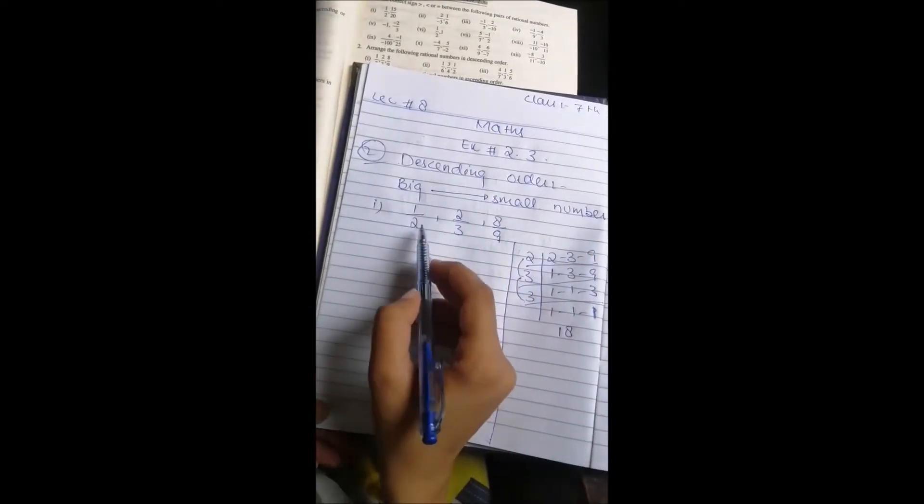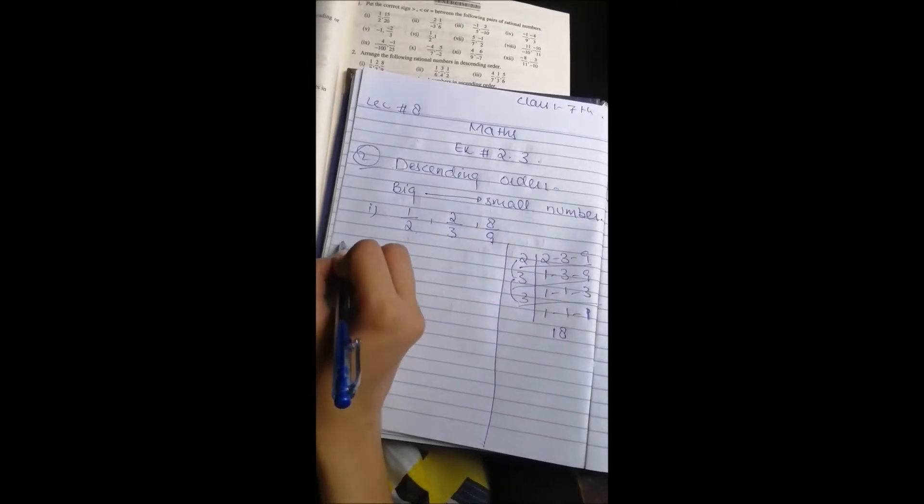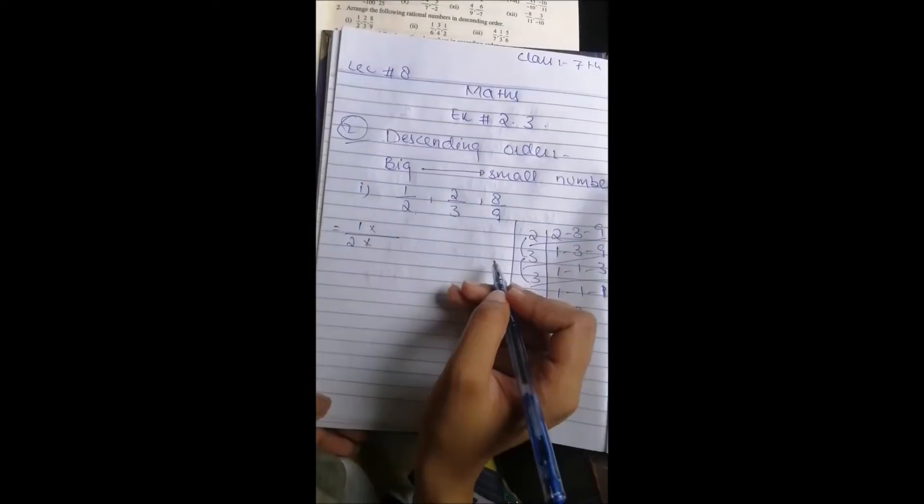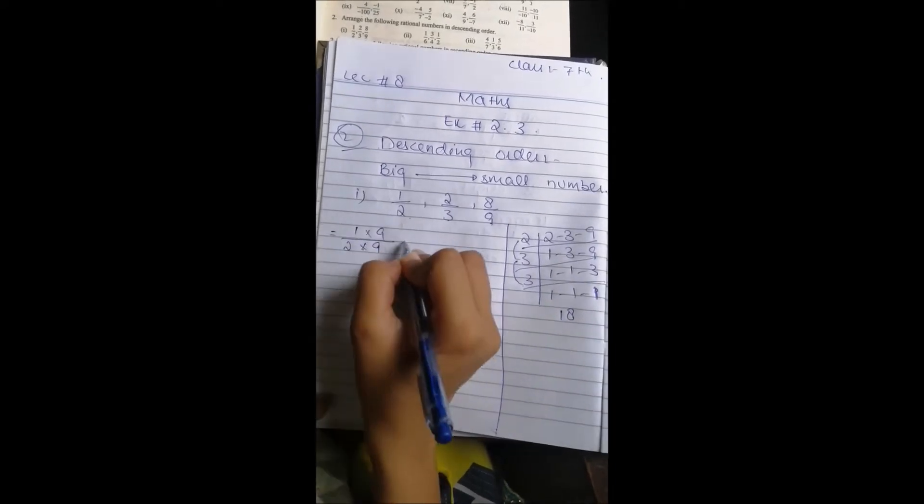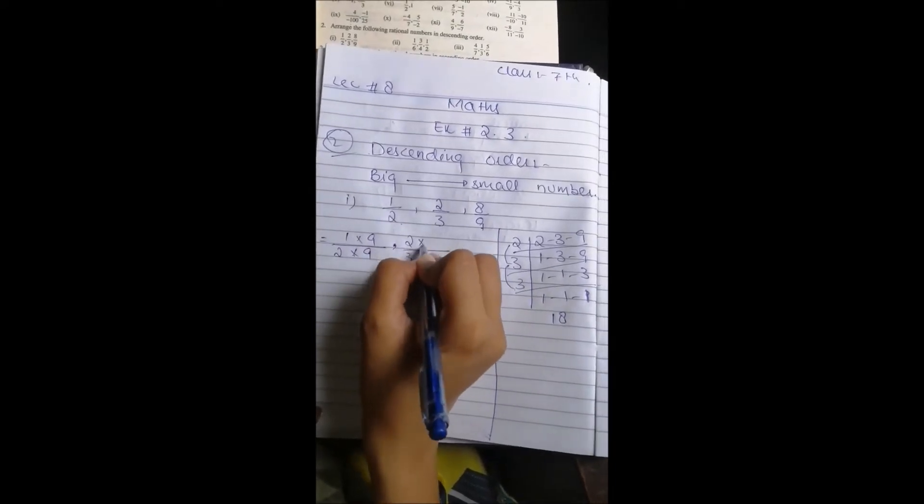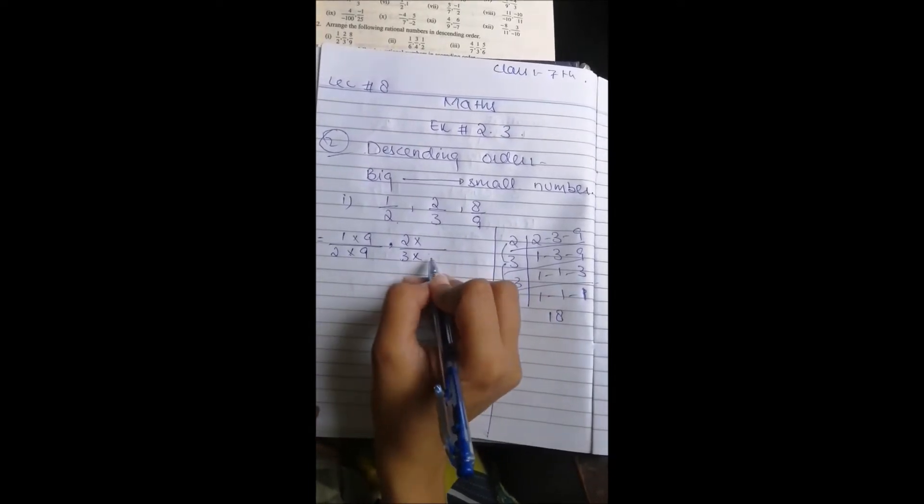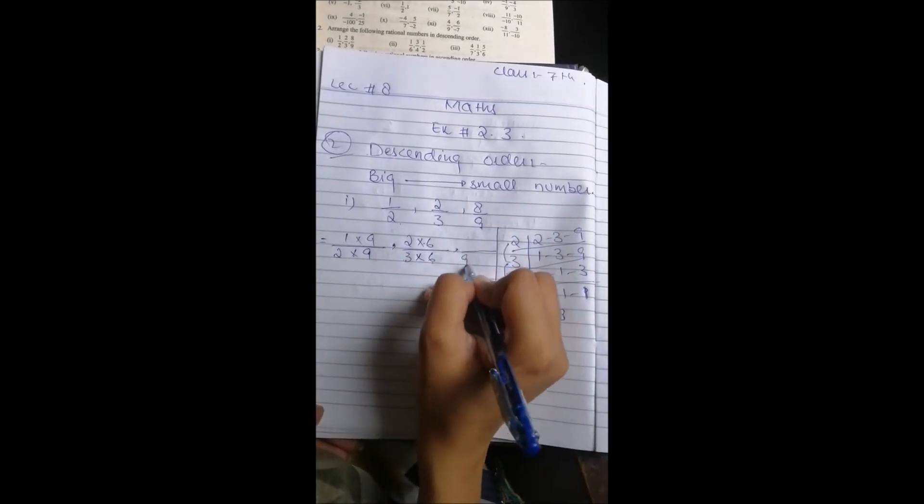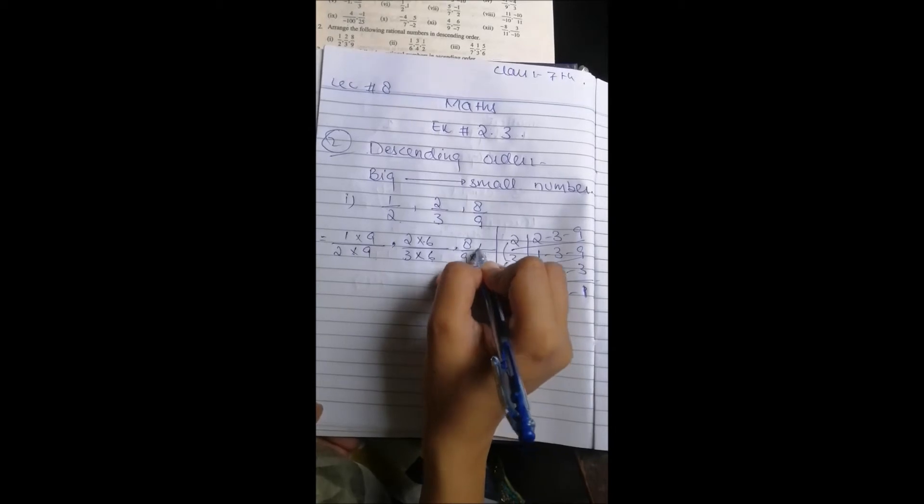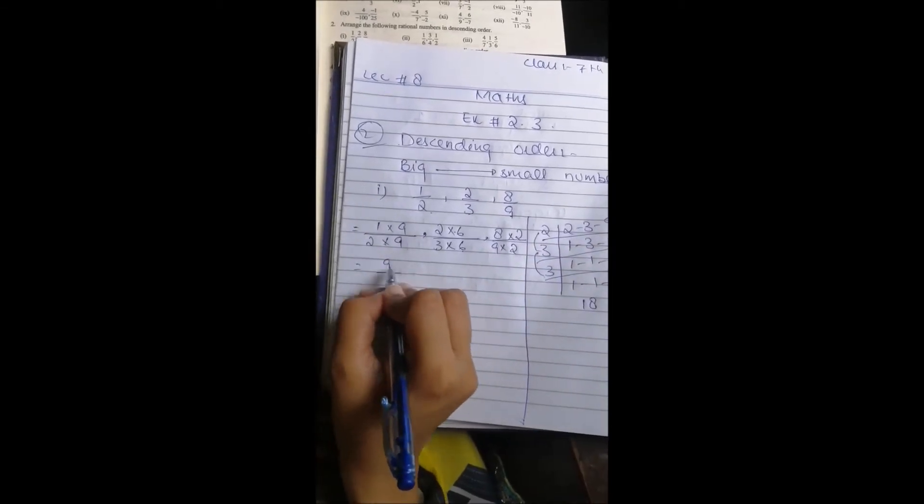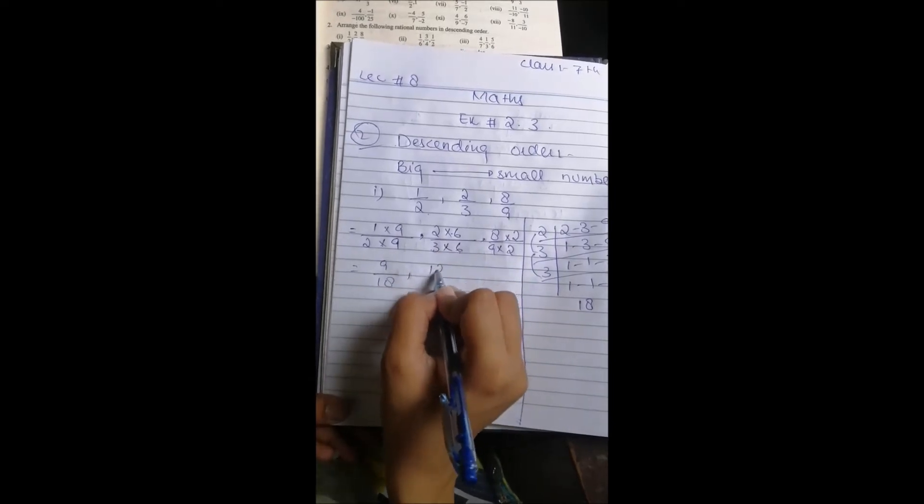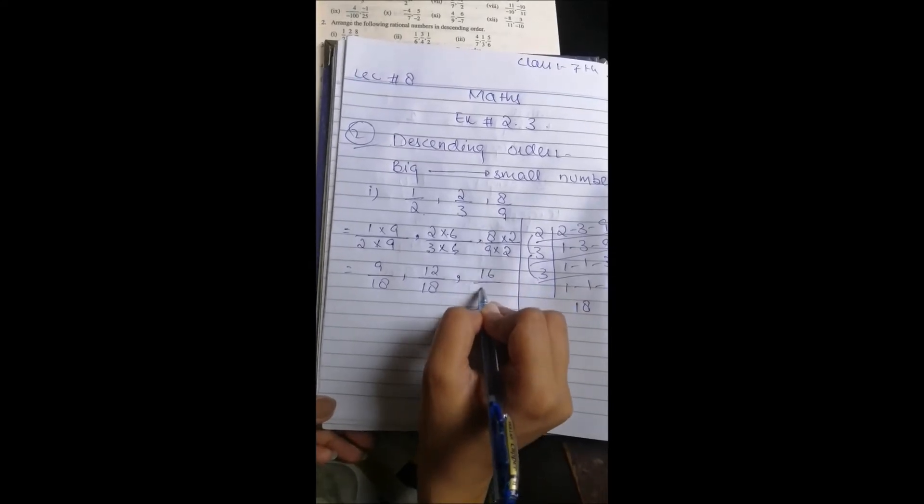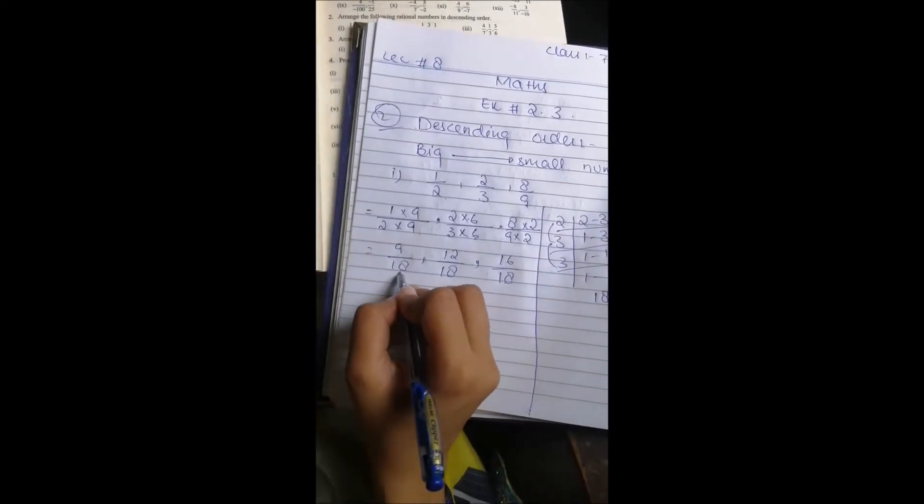18. This means you have to make your denominator 18. I want to make 18. If you multiply this with 9, it will be 18. If you want to make 3 into 18, you will multiply it with 6. Where do you work with 9? You will multiply it with 2. 9, 1, 9, 2, 18. 6, 2, 12. 6, 3, 18. 8, 2, 16. 9, 2, 18.